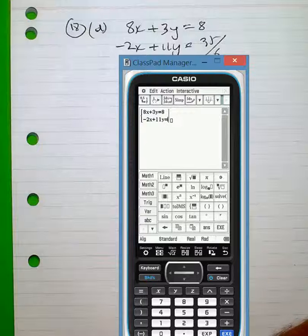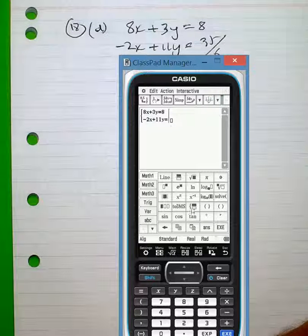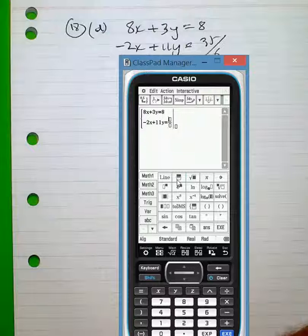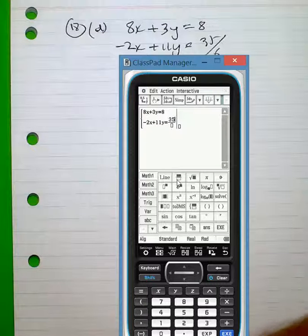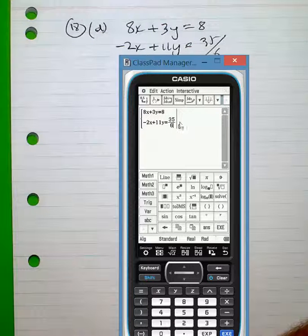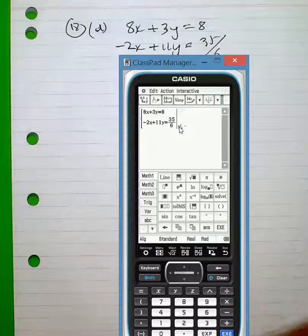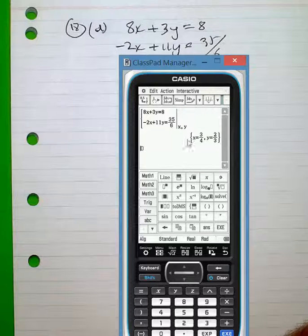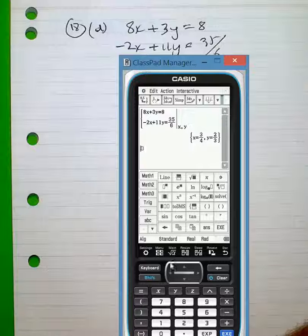And what I've done now is to enter this into the simultaneous equation solver in my calculator. I'm going to use the fractional key to help me out there. I'm solving this for x and y. Enter. And you can see there I get 3/4 and 2/3 as my answer.